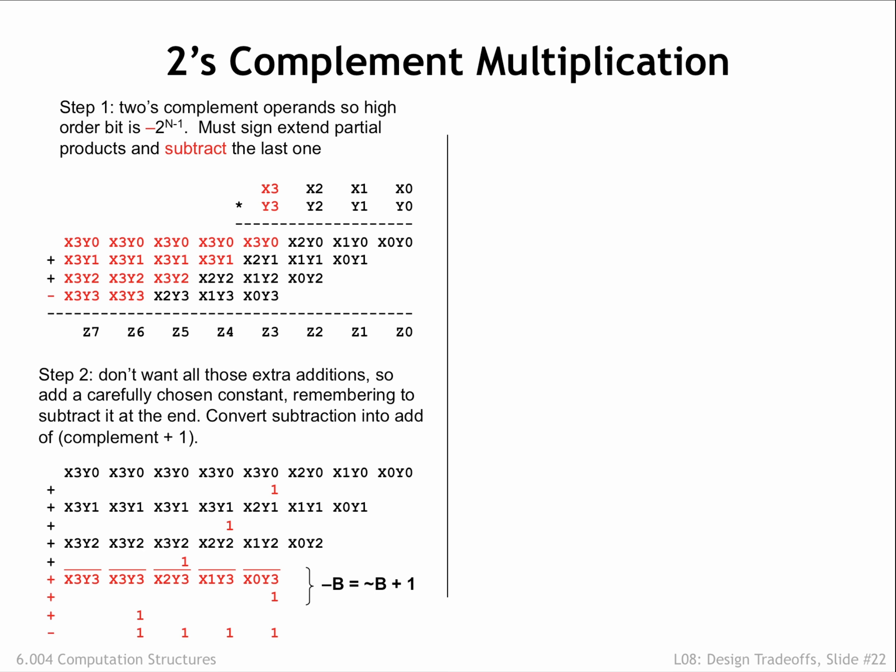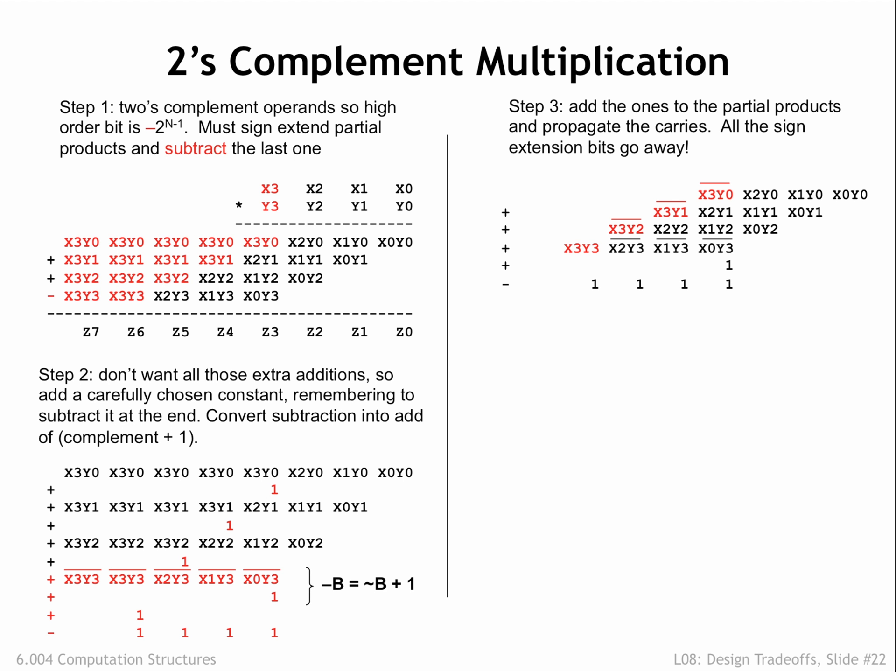This is all a bit mysterious, but here in step 3 we see the effect of all the step 2 machinations. Let's look at the higher-order bit of the first partial product, x3, y0.